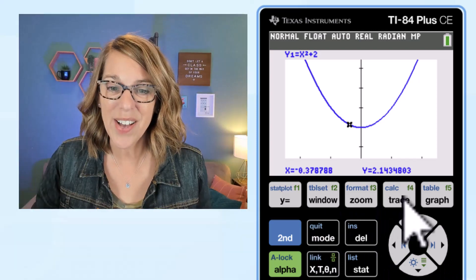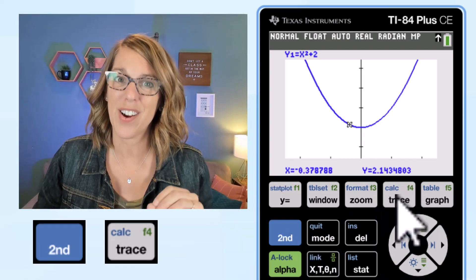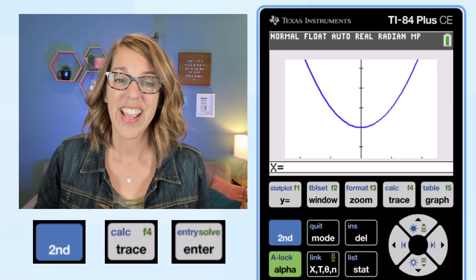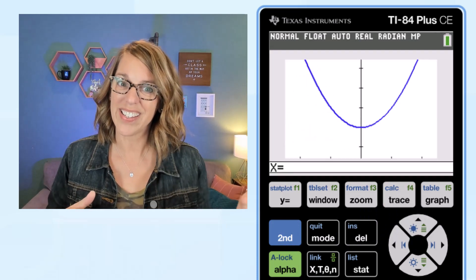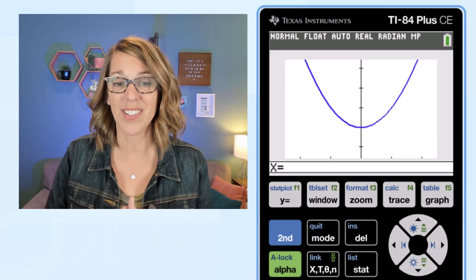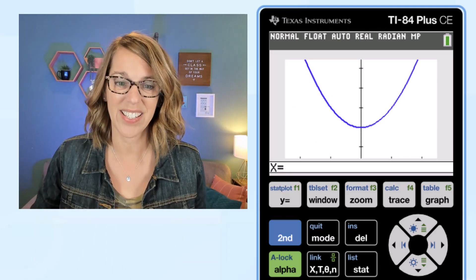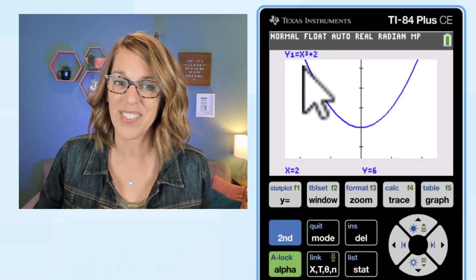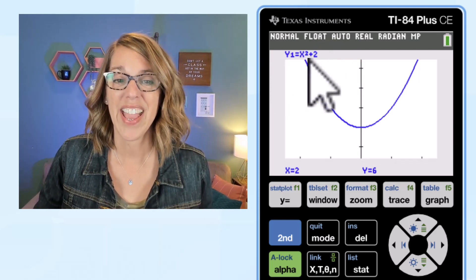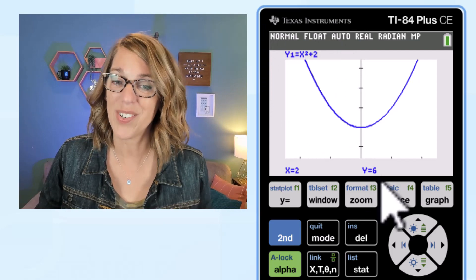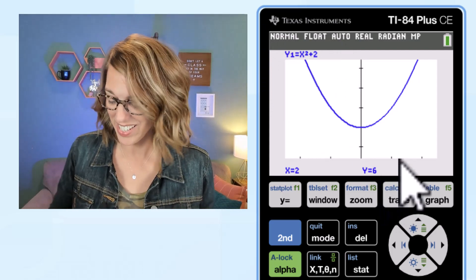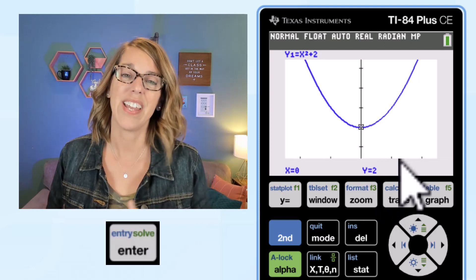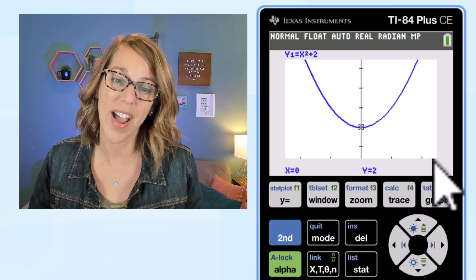That is in the calc menu so if I click on second followed by our calc button I get value as one of my choices and it says give me an X and it's going to give me a Y back. So let's see what's happening at say X equals 2 and then I'm going to hit enter. Notice up above it's giving you your Y values and X squared plus 2 is equal to 6. I can type another number just right on top of that X equals 0 and it gives me its new Y value.